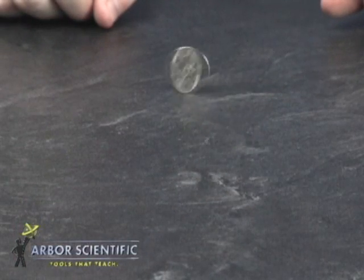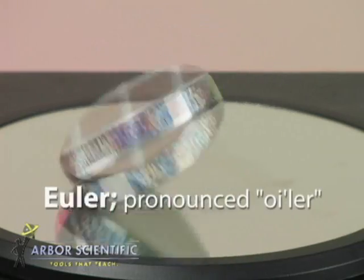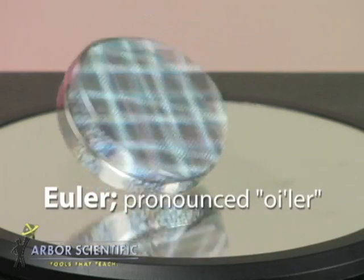If you've ever seen a coin spinning on a tabletop, you've got to see Euler's disk. This elegant device, named after physicist and mathematician Leonard Euler, demonstrates the conservation of energy and angular momentum.